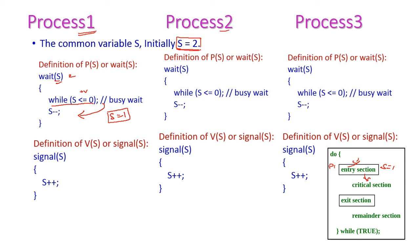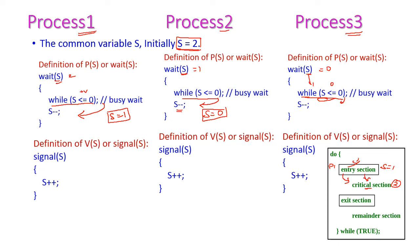Simultaneously, process 2 will also try to enter the critical section. Now S equals 1, which is also greater than 0. Hence it comes out of the while loop, and process 2 decrements the S value — now S equals 0. Process 2 will also enter into the critical section because we have 2 resources, so we allow 2 processes to enter; 2 different threads execute in the same section. At the same time, process 3 also tries to enter the critical section. Now the S value is 0, so process 3 enters the while operation — the S value is 0, hence it gets stuck in the while loop and will not come out, until one of the 2 processes already inside completes and comes out.